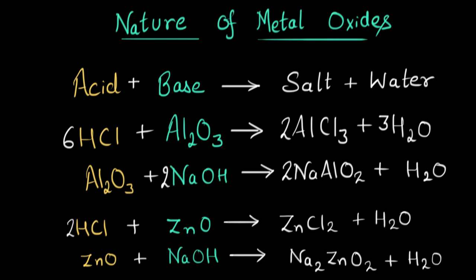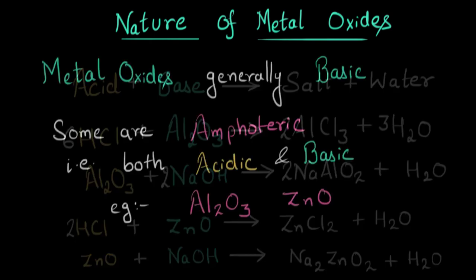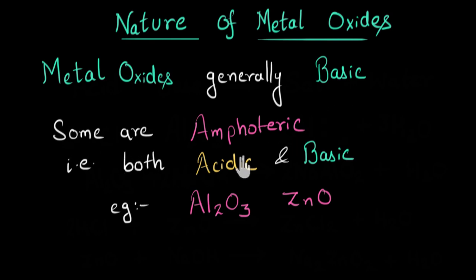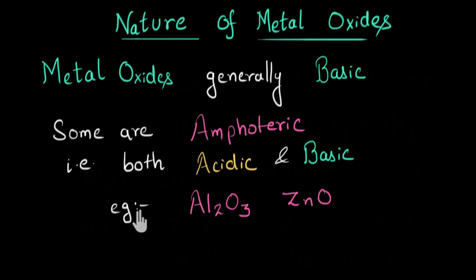So far we have seen that metal oxides are generally basic in nature, whereas there are some exceptions. Some metal oxides are called amphoteric, meaning they can act both as acid and base. The examples we saw are aluminum oxide and zinc oxide.